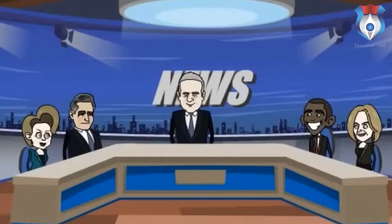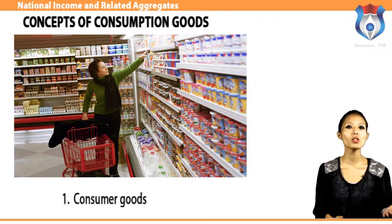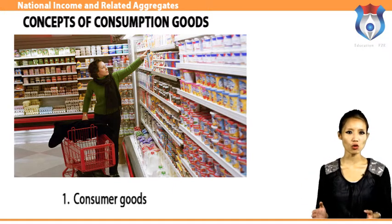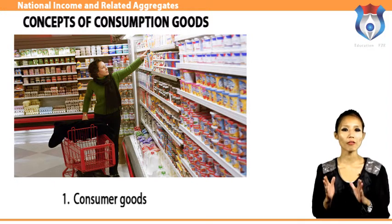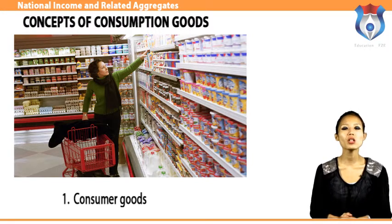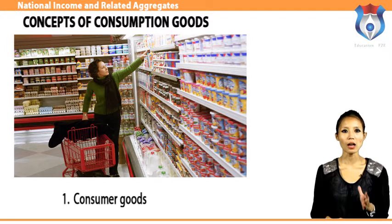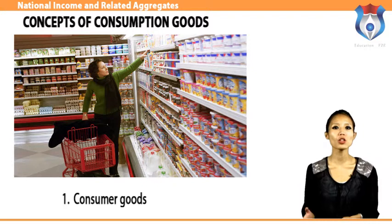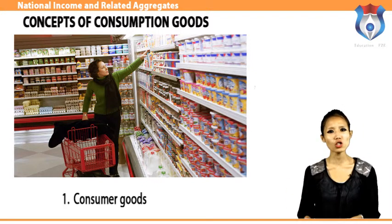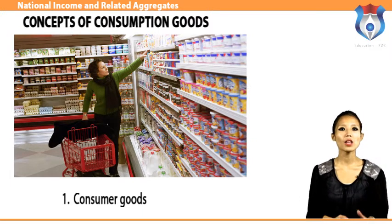Now we will look at various kinds of goods. Consumer goods — also called final goods — are products purchased for consumption by the average consumer. They are the end results of production and manufacturing. Clothing, food, automobiles, and jewelry are all examples of consumer goods. The measurement of consumer goods sales is important in assessing gross domestic product and determining the health of the overall economy. Items are only counted as consumer goods once; if resold, they are not included in economic calculation.